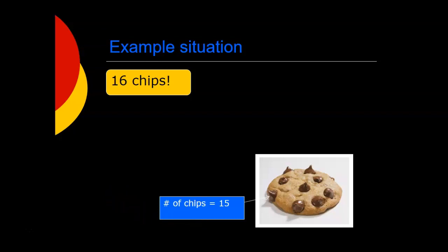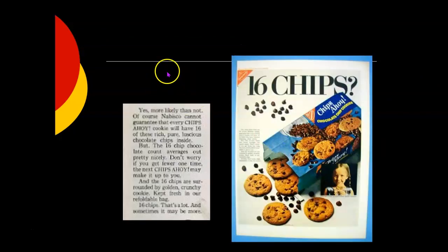So should you be mad? Should you complain and say, hey, you were lying about that 16 chips? Well, no, that's just an average. Some cookies might have more than average, some might have less than average. But just because the average is 16 chips per cookie doesn't mean that you're going to get 16 chips in any particular cookie. In fact, they even ran an ad about that.